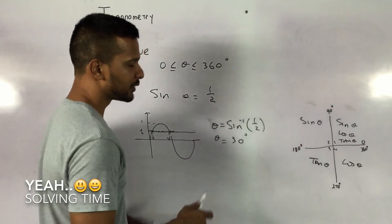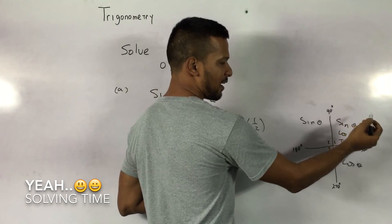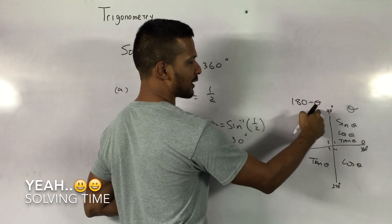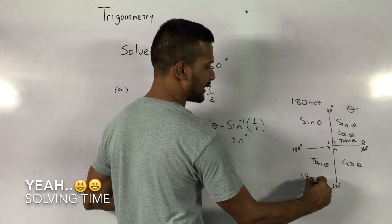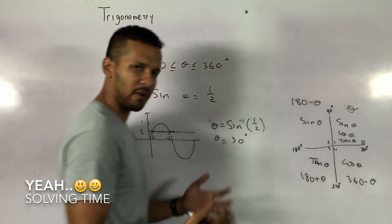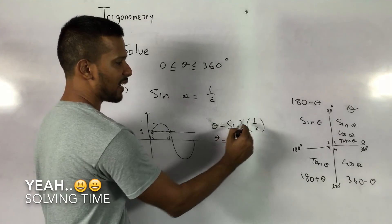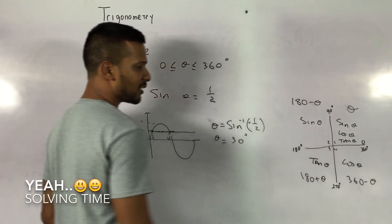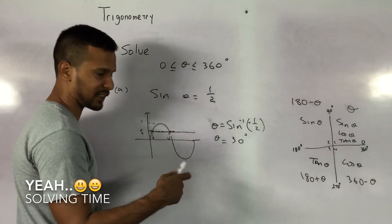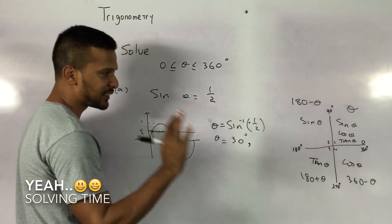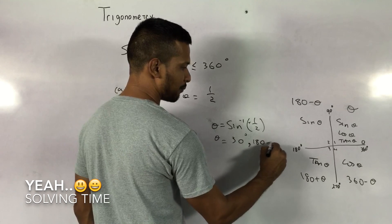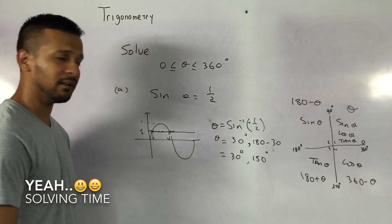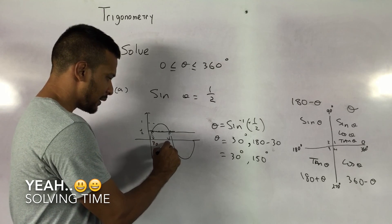Since sine gives a half twice in 0–360, we should have two answers. In the first quadrant, the calculator gives theta directly. For the second quadrant, we subtract theta from 180 to get the second solution. For the third quadrant it would be 180 plus theta, and for the fourth quadrant 360 minus theta. Since sine is positive in the first and second quadrants, our two solutions are theta equals 30 degrees and theta equals 150 degrees.